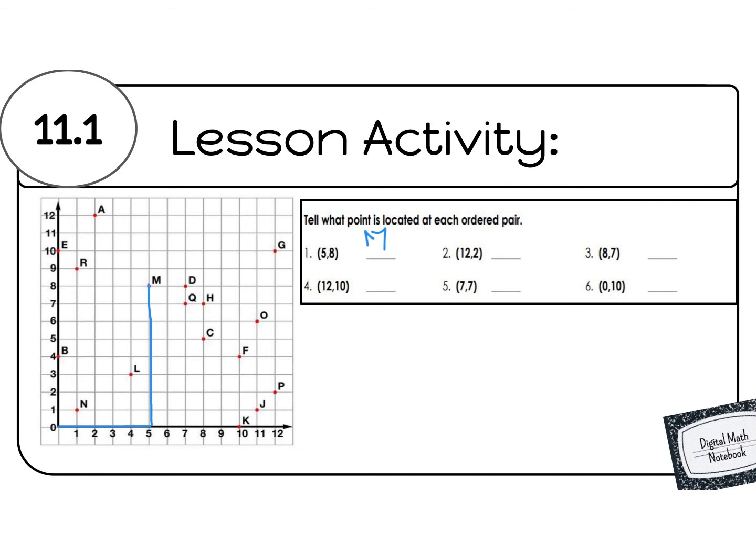Our next one is 12, 2. For 12, 2, we're going to start all the way over at 0 again. We're not going to go from M. We're going to start at 0. We're going to go over 12 and up 2, which gives us the point P. Let's try our next one. Our next one is 8, 7. So we're going to start at 0 all over again. We're going to go down the runway 8, and then up 7. It looks like that's the point H.